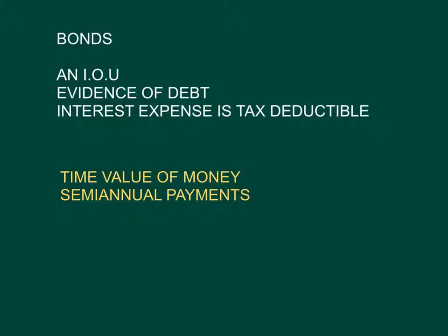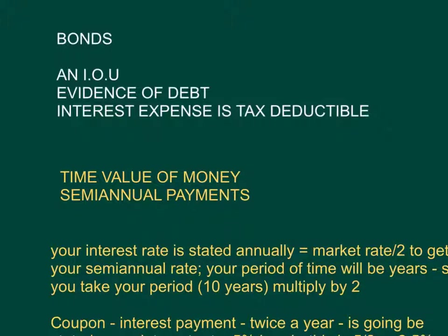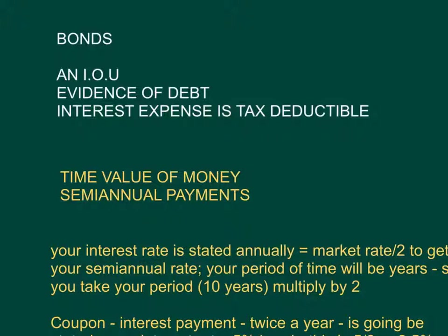You have to use time value of money calculations, and most bonds are semi-annual payments — you're going to be paying twice a year. With semi-annual payments, what you have to take into account is your interest rate is stated annually. So you want to take the market rate and divide by 2 to get your semi-annual rate.